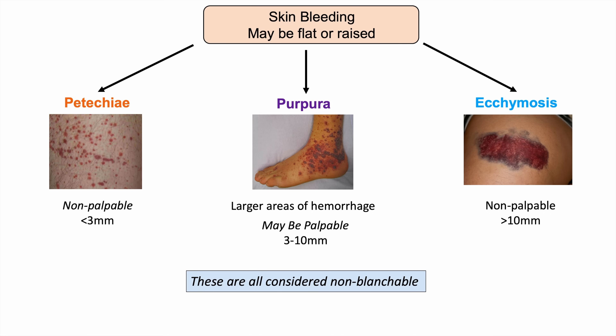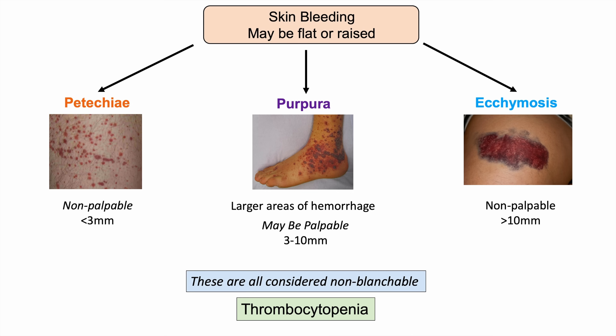Non-blanchable means that if you push down on the skin lesion and lift your finger, it doesn't go away. Some red lesions blanch when pressed, but these do not. All three — petechiae, purpura, and ecchymosis — are generally due to thrombocytopenia or low platelet count, though palpable purpura can occur in other conditions. Size determines the classification: less than 3mm is petechiae, 3–10mm is purpura, greater than 10mm is ecchymosis.